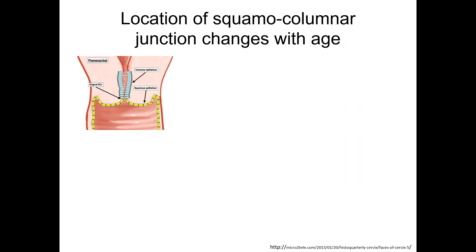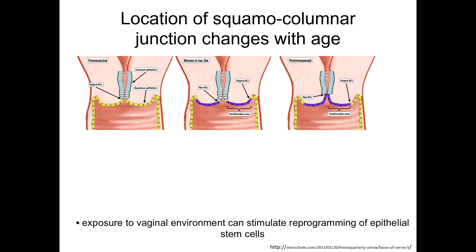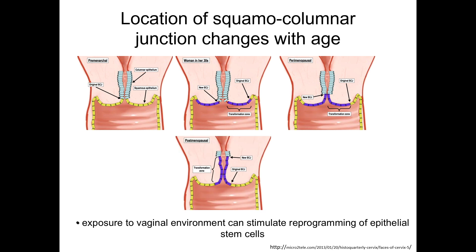This cartoon illustrates the age-dependent changes in this junction. At birth, the exposed ectocervix is covered with stratified epithelium, and the endocervix, close to the cervical canal, is covered with columnar epithelium. Hormonal changes during puberty will cause the columnar epithelium to spread and cover the endocervix. However, at the same time, the vaginal environment becomes acidic, and this exposure causes the epithelium of the ectocervix to transform into stratified squamous non-keratinized epithelium. As women age, the stratified epithelium begins to cover more and more of the ectocervix, and after menopause can extend into the cervical canal. This transformation of columnar epithelium to stratified epithelium is an example of metaplasia, occurring in a region termed the transformation zone.